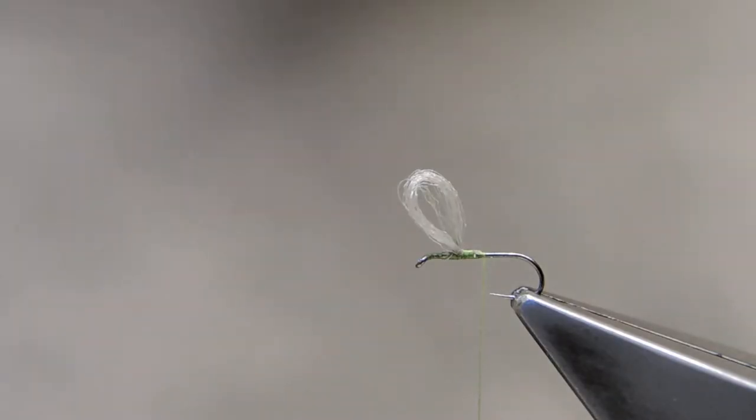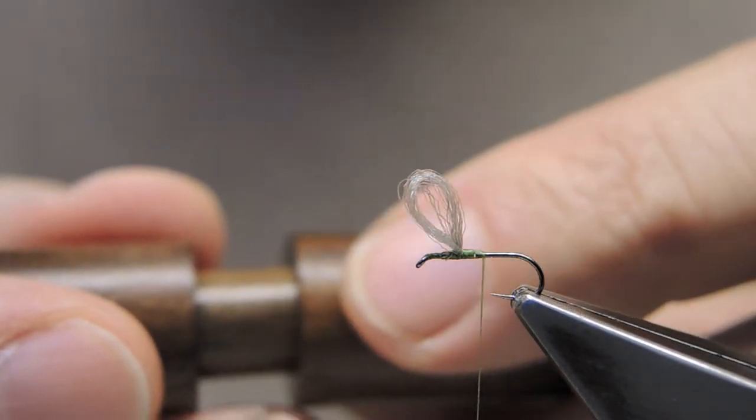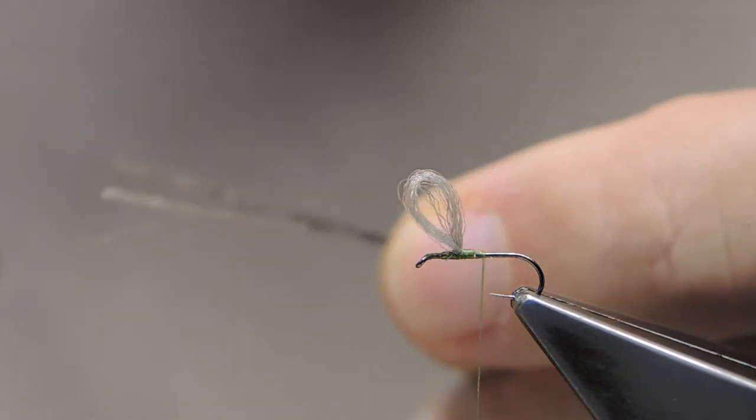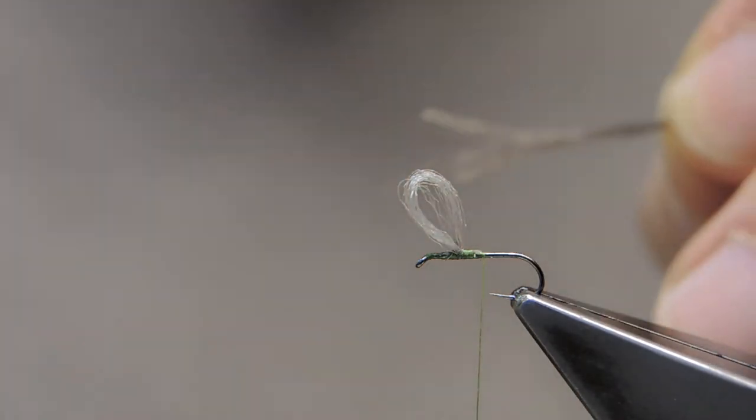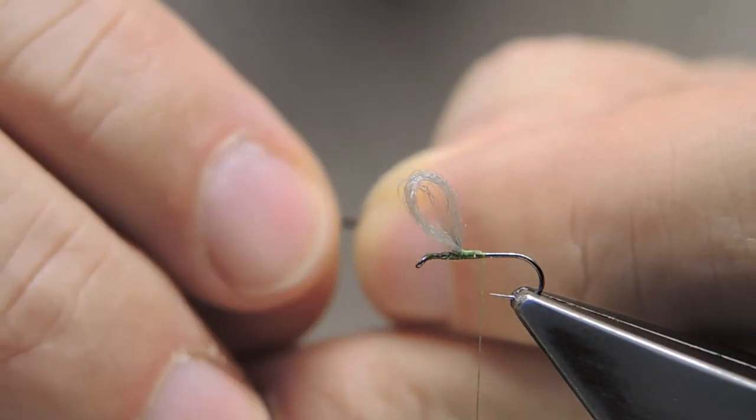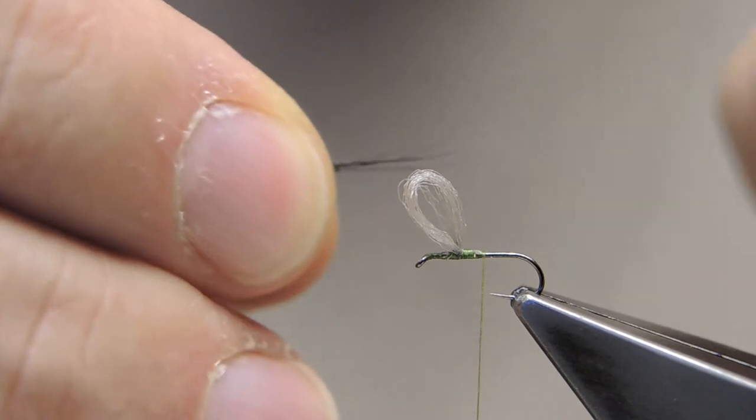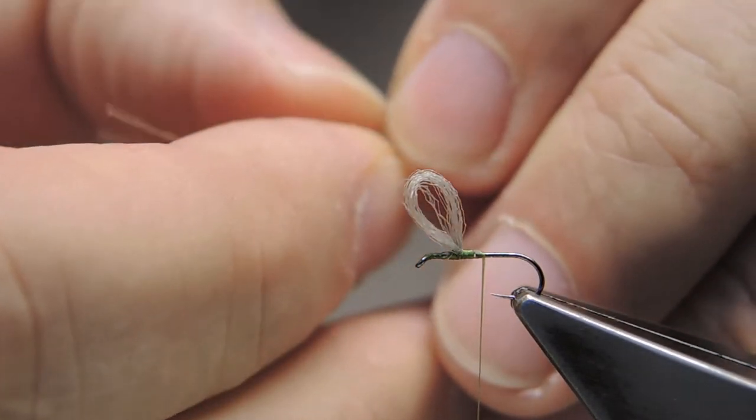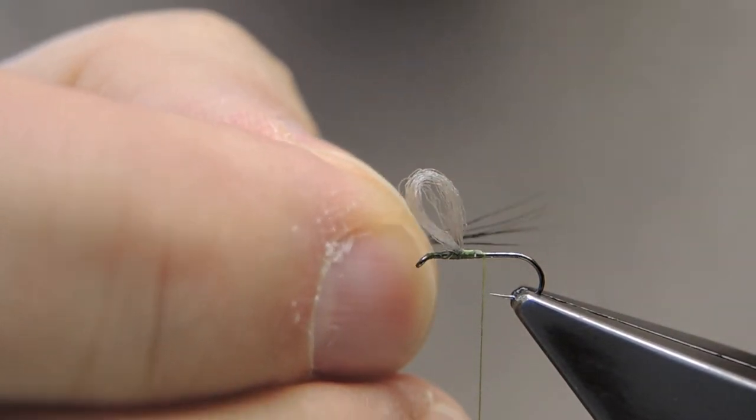For the tail material, I'll use six strands of moose body hair, which I've placed into the stacker to even the tips. The original pattern calls for micro-fibets. I just prefer the moose body hair, with its slightly faster taper.